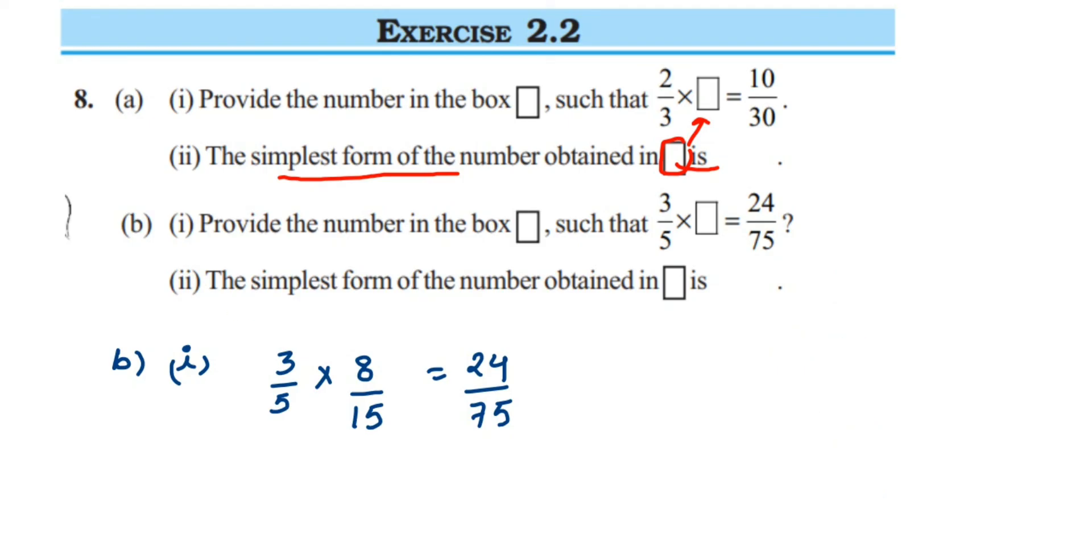The second question is similar to the first one: the simplest form of the number obtained in the box. In the box we got 8 upon 15, so we have to bring it to the lowest form. This is the second question, the simplest form.